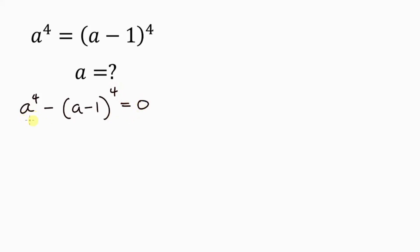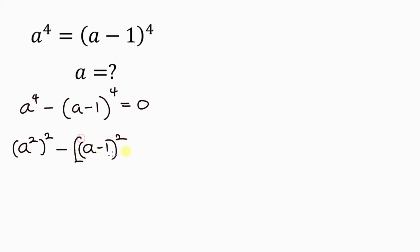Now we can express this as a difference of two squares, because this can be written as a squared, raised to the power of 2, minus a minus 1 squared, raised to the power of 2, and this is equal to 0. This is valid because from indices we can multiply: 2 times 2 gives 4.